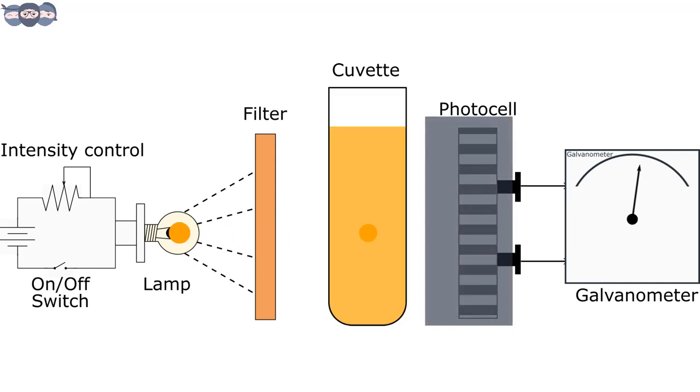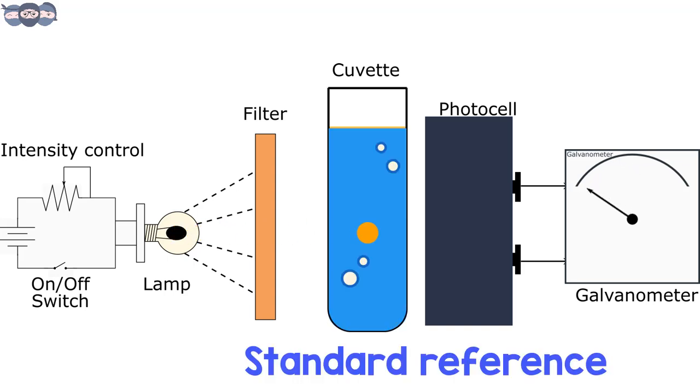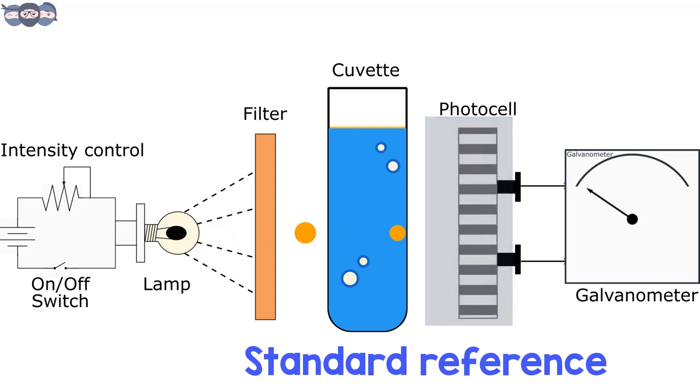Initially, the detector is darkened and galvanometer is adjusted mechanically to read zero. Now, a reference solution or blank solution is kept in the sample holder. The light transmitted from this solution is made to fall on the detector. The intensity of light source is adjusted using the intensity control circuit such that the galvanometer shows 100% transmission.